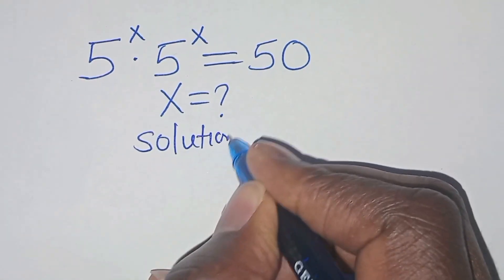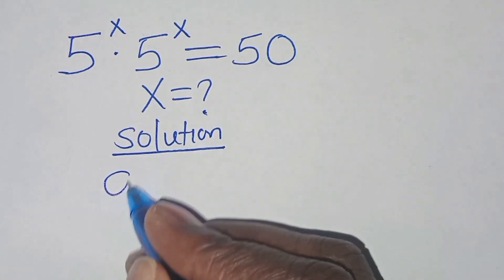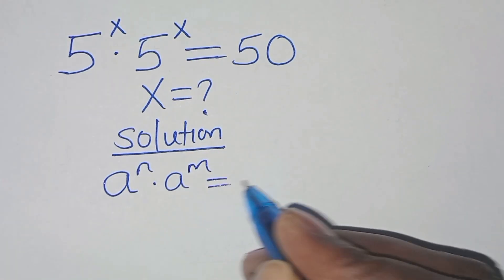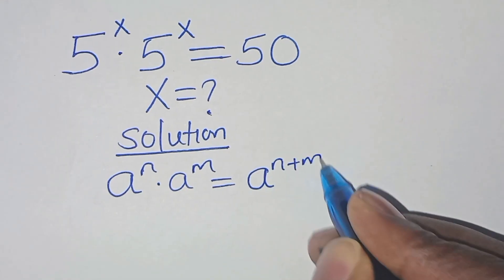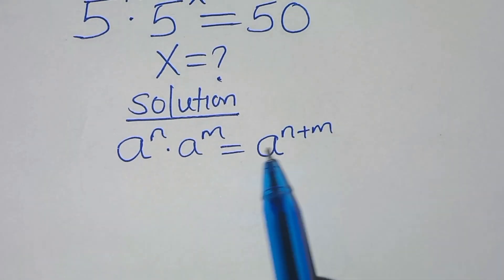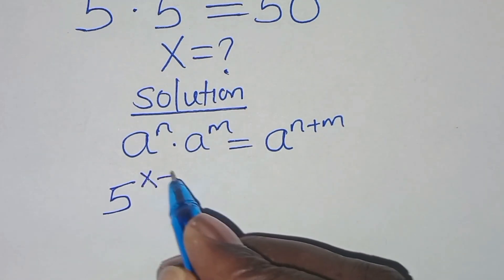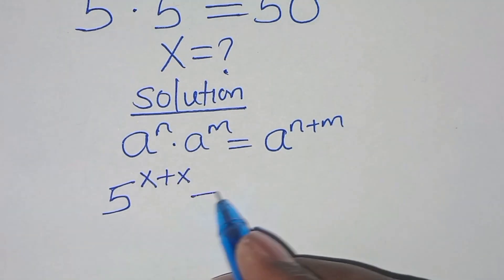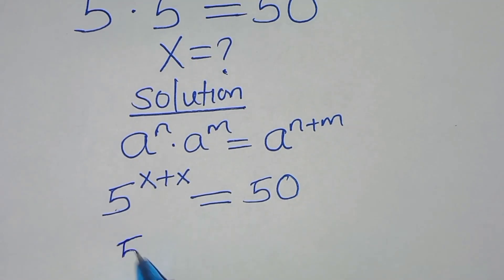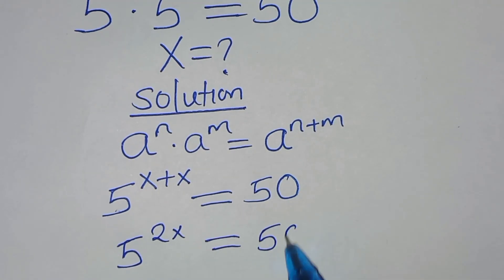Solution: this exponential equation is in the form of a to the power n times a to the power m, which we can express as a to the power n plus m. So applying this exponent property, here we have 5 to the power x plus x, which gives us 5 to the power 2x, and this is equal to 50.